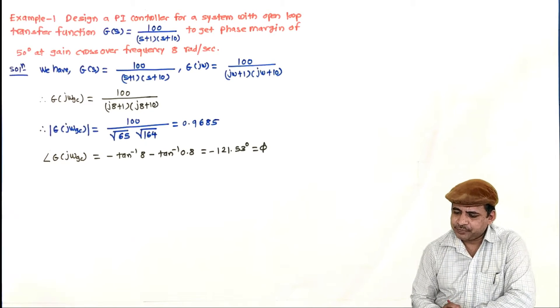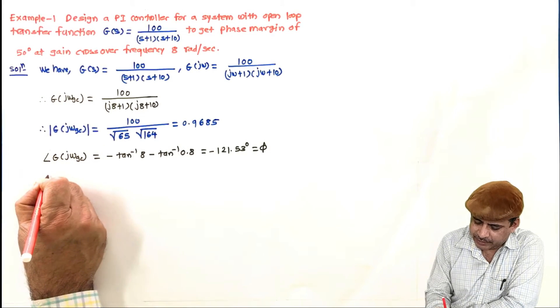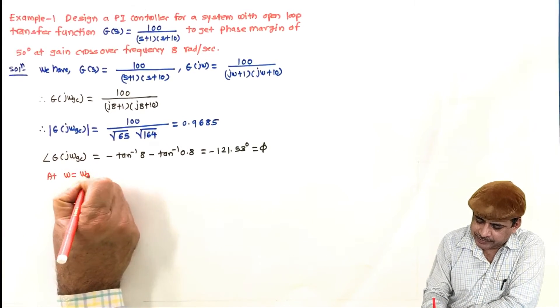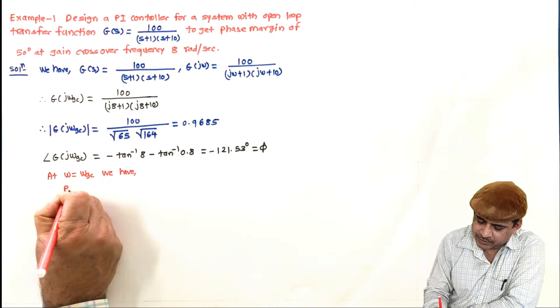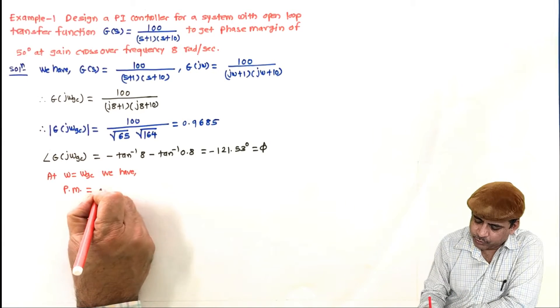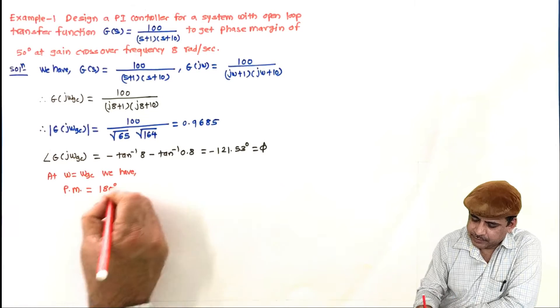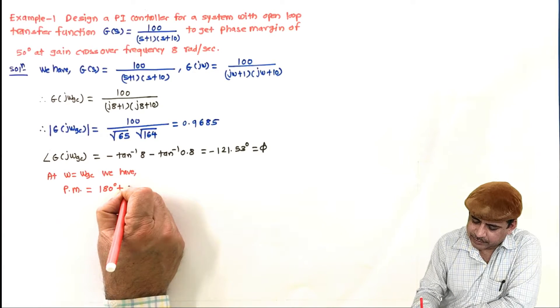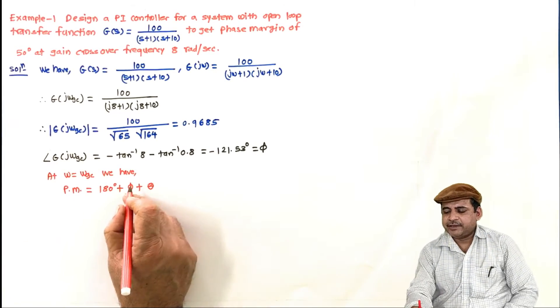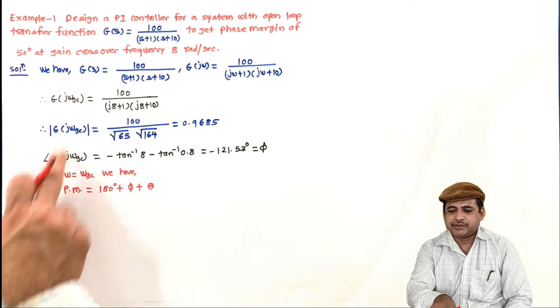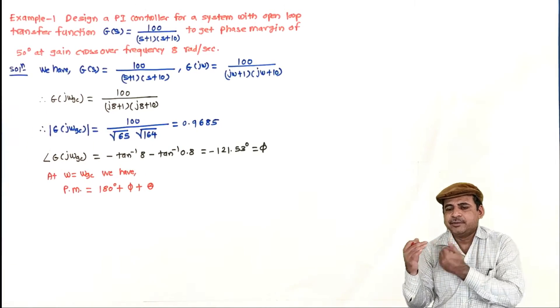Now, what else is given is phase margin is 50 degrees. At ω equal to ωgc we have phase margin equals 180° plus φ plus θ, where φ is the angle of the system function at ω equal to ωgc and θ is the angle contributed by the PI controller.